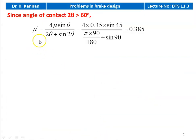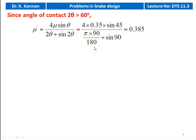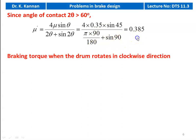Since the angle of contact 2θ is greater than 60 degrees, we have to correct the coefficient of friction. μ' = 4μ sin θ / (2θ + sin 2θ) = 4 × 0.35 × sin 45 / (π × 90/180 + sin 90) = 0.385.